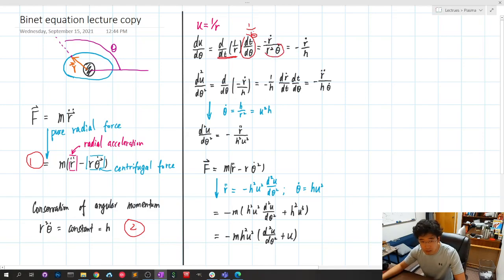We know that this thing, r squared θ dot, is h defined as angular momentum over mass.